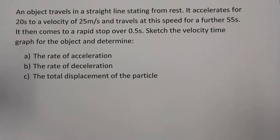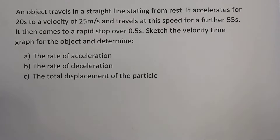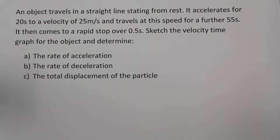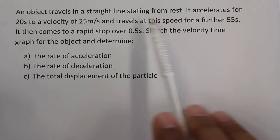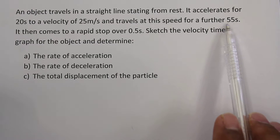So let's get into the question. The question is: an object travels in a straight line starting from rest. It accelerates for 20 seconds to a velocity of 25 meters per second. Imagine you're in a car and you've accelerated to 25 meters per second — that's roughly around 90 kilometers per hour. It travels at this speed for a further 55 seconds.